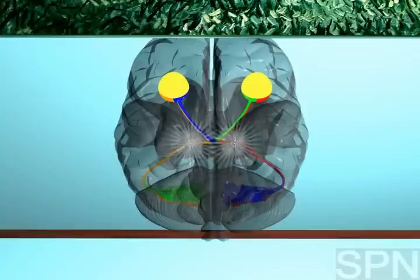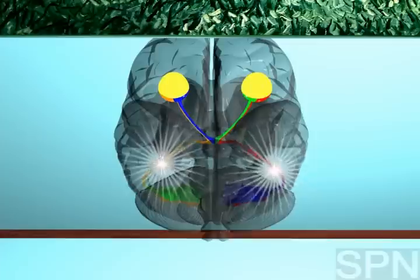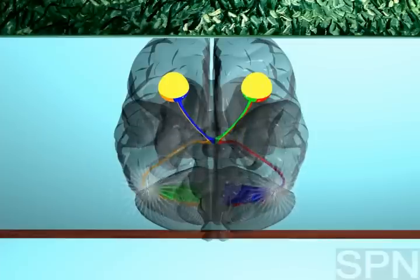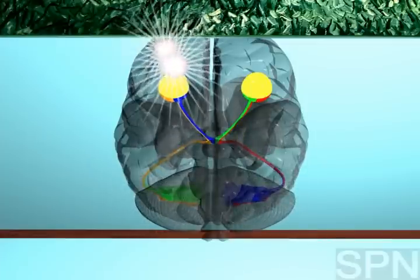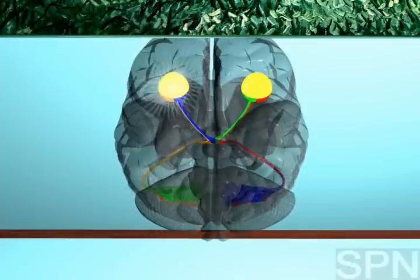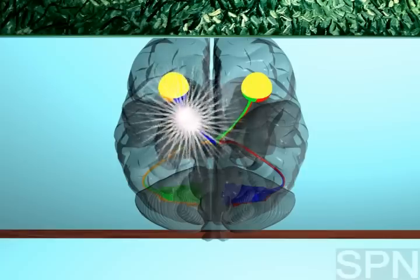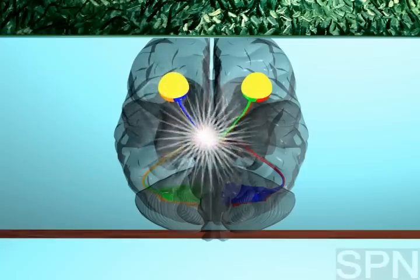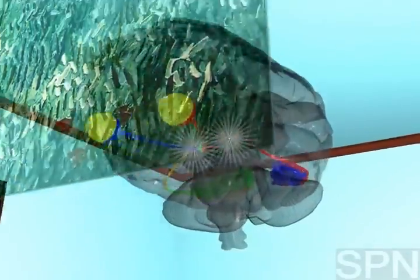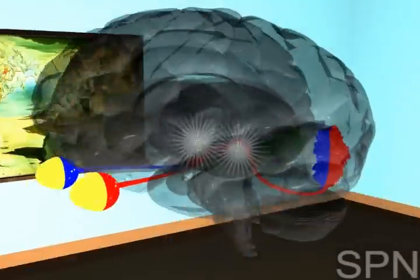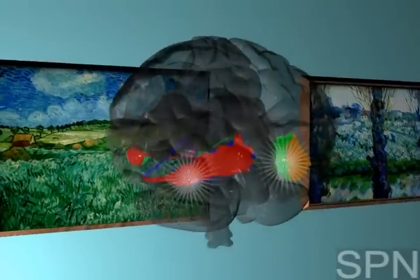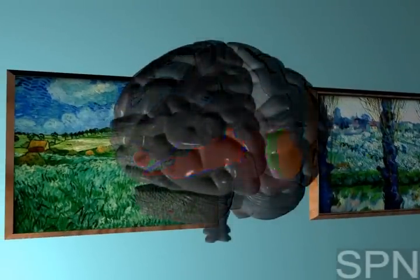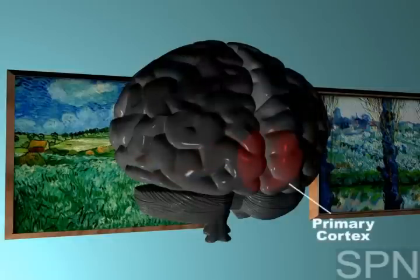Thus, each side of the brain receives visual information from both eyes. Information from the temporal part of the right visual field crosses over to the left hemisphere. Information from the temporal part of the left visual field crosses over to the right hemisphere. This is called contralaterality of vision.